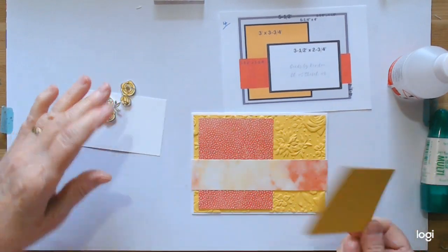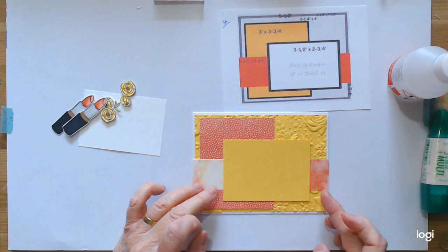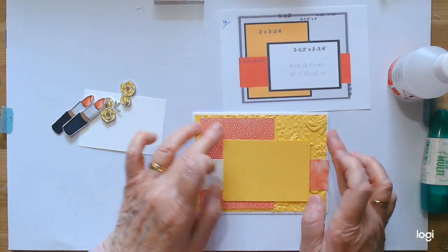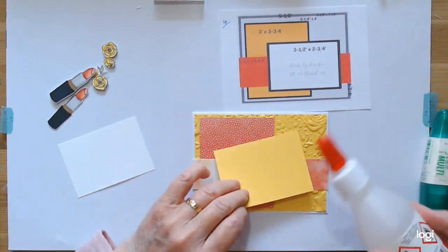Now the top layer I have gone with the matching card stock which we'll just set about here. So we're seeing bits of everything, and my white card is going to go over the top of that, but we're going to put this on first.